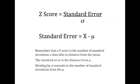If we take the standard error, which is the distance the data lies from the mean, and we divide it by sigma, the standard deviation, then we find out how many standard deviations the data lies from the mean. A Z-score is the number of standard deviations that a data falls in distance from the mean.